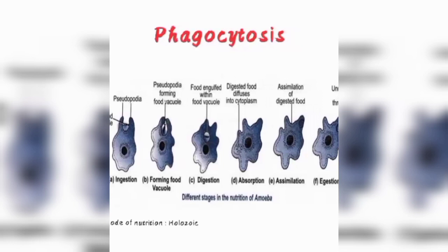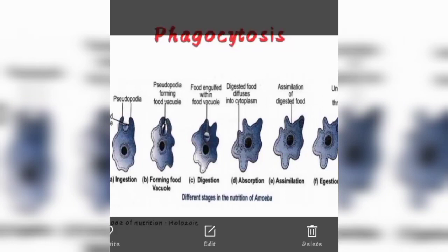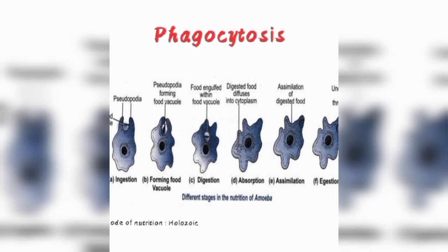The food vacuole comes into the amoeba, and digestive enzymes break down the food particles into smaller particles. When the food particles are broken down, the digested food is absorbed directly into the body of the amoeba by diffusion.